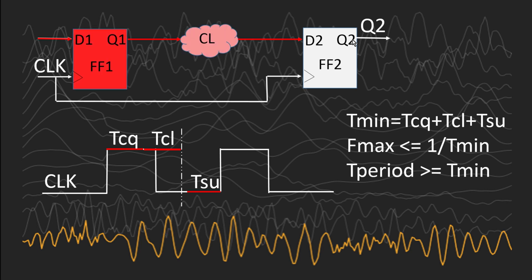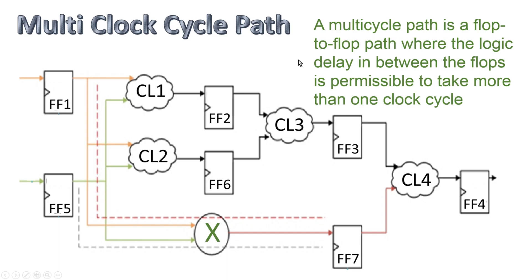Now let us talk about multi-clock cycle paths. A multi-clock cycle path is a flip-flop to flip-flop path where the logic delay between the flip-flops is permissible to take more than one clock cycle. If a flip-flop to flip-flop path has a combinational delay which is more than the time period of the clock itself, it is a problematic situation — it will cause a violation and the functionality of the design will fail. But there are special paths which are allowed to have combinational logic delay more than the time period of the clock with no violation, and these are called multi-clock cycle paths.